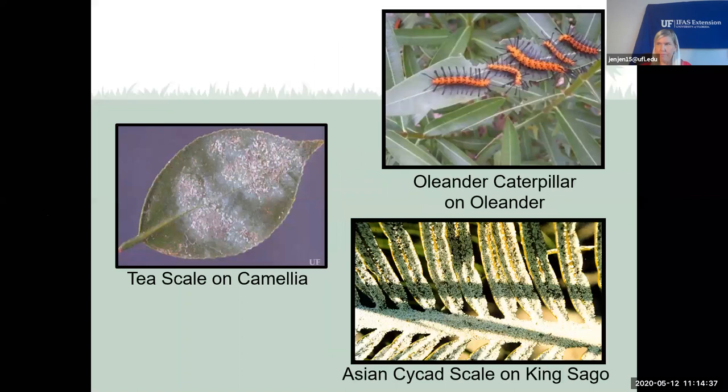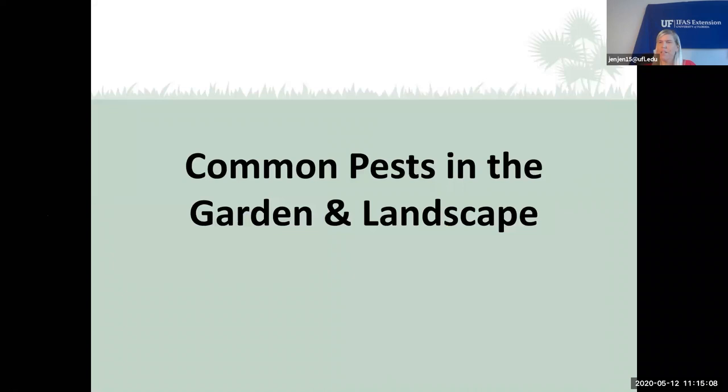Here are some other key pests and key plants. Tea scale is a stationary insect frequently found on camellia. The oleander caterpillar loves to eat all the leaves off oleanders. And if you have a sago palm in your landscape, it typically gets the Asian cycad scale.